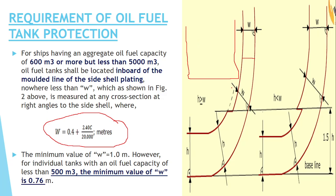So if your aggregate fuel oil capacity is more than 600m³ but less than 5000m³, you should follow this formula. Whatever value comes, you have to take that or 1 metre, whichever is less. Meaning the minimum you can go is 1 metre.